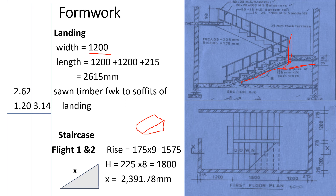To get the height: we have one, two, three, four, five, six, seven, eight, nine — nine risers. One riser is 175 millimeters, so 175 times 9 gives us 1575 millimeters. For the horizontal width: the number of treads is the number of risers less one, so eight treads. 225 times 8 gives us 1800 millimeters. Using the Pythagorean theorem to find the hypotenuse x, we get x = 2391.78 millimeters.